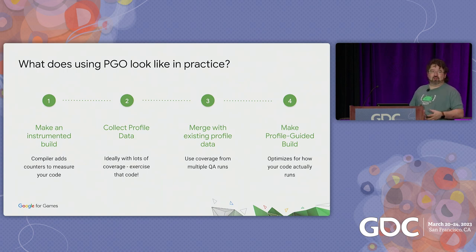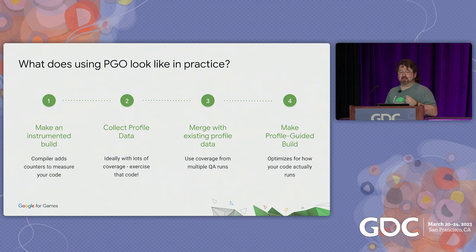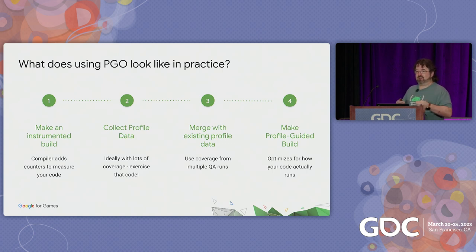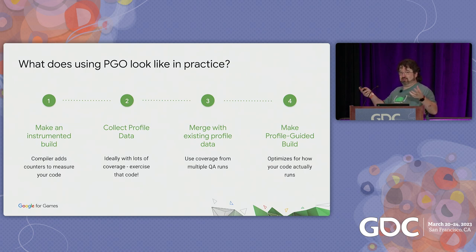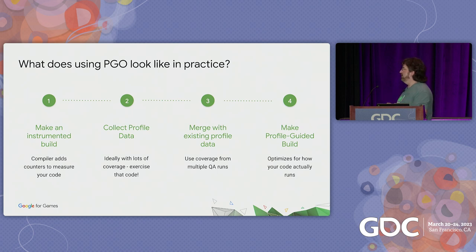So when you're doing this in practice, what does the process look like? First, you make an instrumented build — the compiler will automatically add counters to measure your code. Then you collect profile data: you run your instrumented build and get as much coverage as you can, running through as many different scenarios as possible. At the end of those playthroughs, the instrumented code will dump a profile file out to disk. If you're doing multiple runs with a QA team, you'll be able to merge those profiles together — different people can test different levels, generating different profile data. Finally, you take all the collected data and provide it to the compiler to perform a profile-guided build.